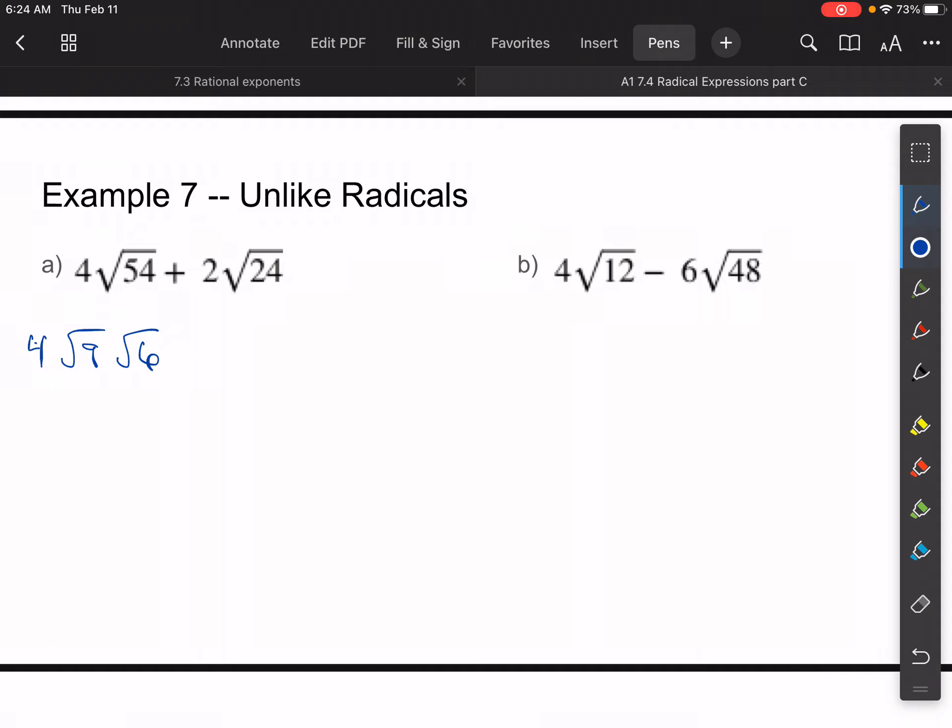And then let's see if there's anything in 24 here. Yeah, there is because 4 goes into 24. So this is the same thing as 2 × √4 × √6. And now we'll just simplify this. The square root of 9 is 3, right? So this is 4 × 3 × √6 + 2. The square root of 4 is 2. 2 × 2√6. So this becomes 12√6 + 4√6, which is equal to 16. 12 + 4 is 16√6. And I'm done.